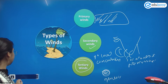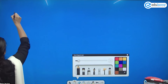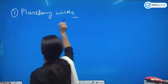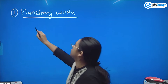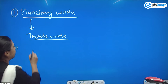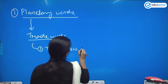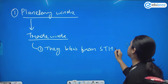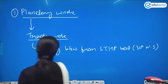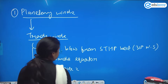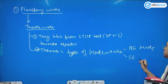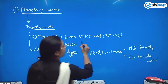Now dealing with planetary winds, we start with the trade winds. Trade winds blow from the subtropical high pressure belt — that is 30 degrees north and south — towards the equator. There are two types: the northeast trade winds and the southeast trade winds. The subtropical high pressure belt is also called horse latitude.